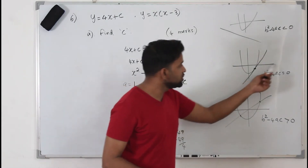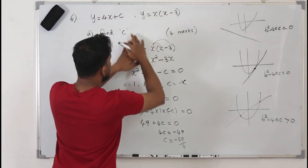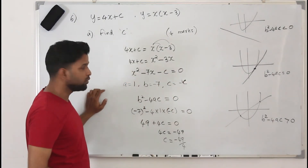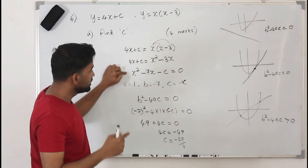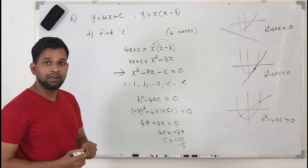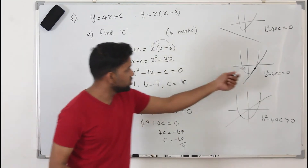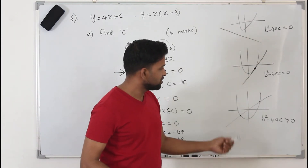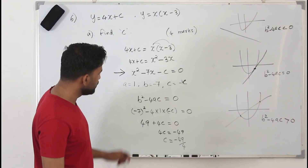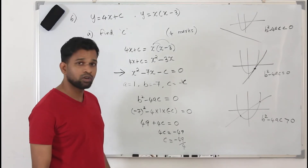The discriminant used here is not the discriminant of the original individual equations. You combine the line and curve equations, equate them, and come up with a new quadratic equation in x. The discriminant of this combined quadratic tells you whether the line touches, never touches, or passes through the parabola. Our c value is minus 49 over 4, which cannot be simplified further.